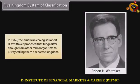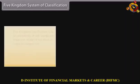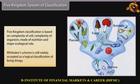Five Kingdom System of Classification: In 1969, the American ecologist Robert H. Whittaker proposed that fungi differ enough from other microorganisms to justify calling them a separate kingdom. This led to a five-kingdom scheme of classification comprising Monera, Protista, Fungi, Plantae, and Animalia. Five Kingdom Classification is based on complexity of cell, complexity of organism, mode of nutrition, and major ecological role. Whittaker's scheme is still widely accepted as a logical classification of living things.